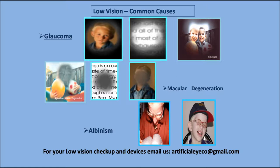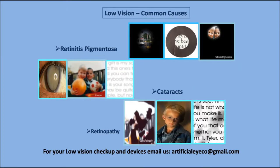What are the common causes of low vision? One of the major causes is glaucoma. Second is macular degeneration. Third is albinism. Also retinitis pigmentosa, cataract, and retinopathy. These are a few of the most common causes of low vision.